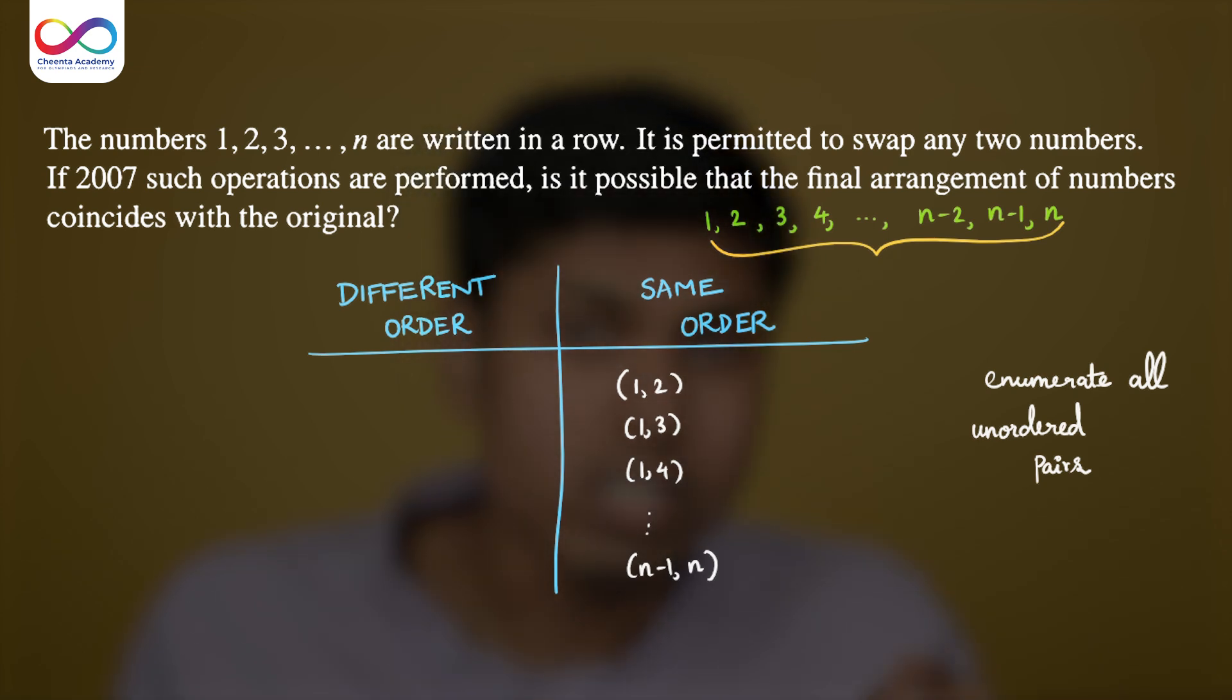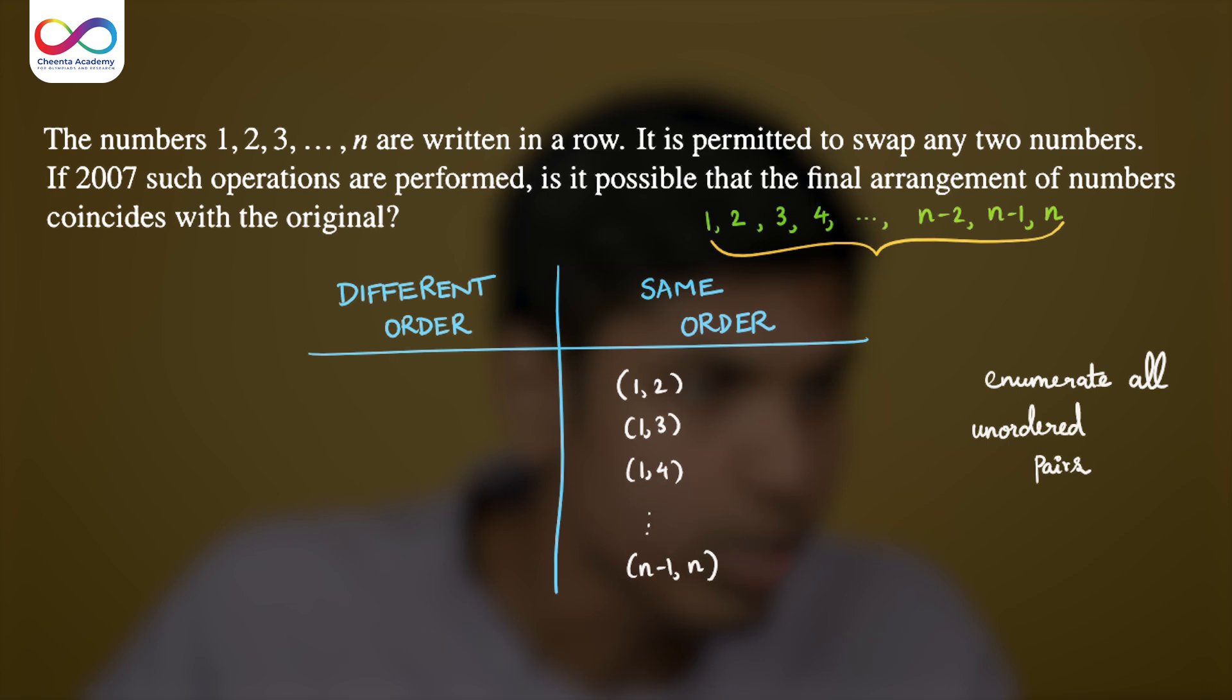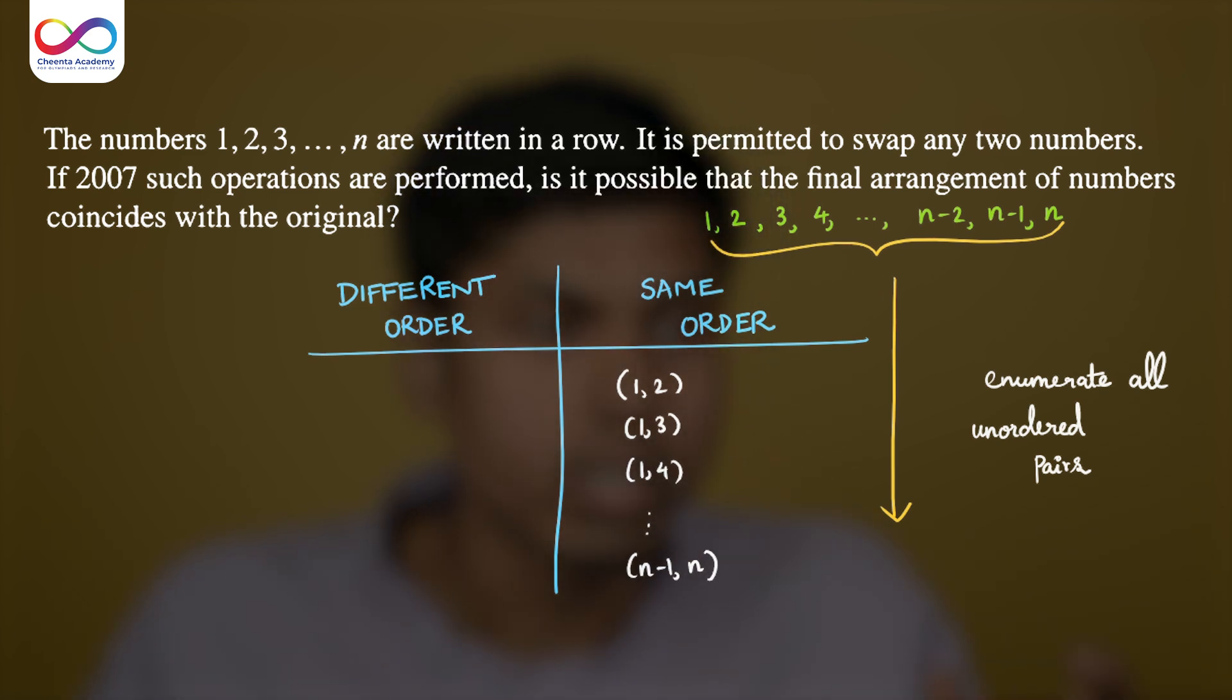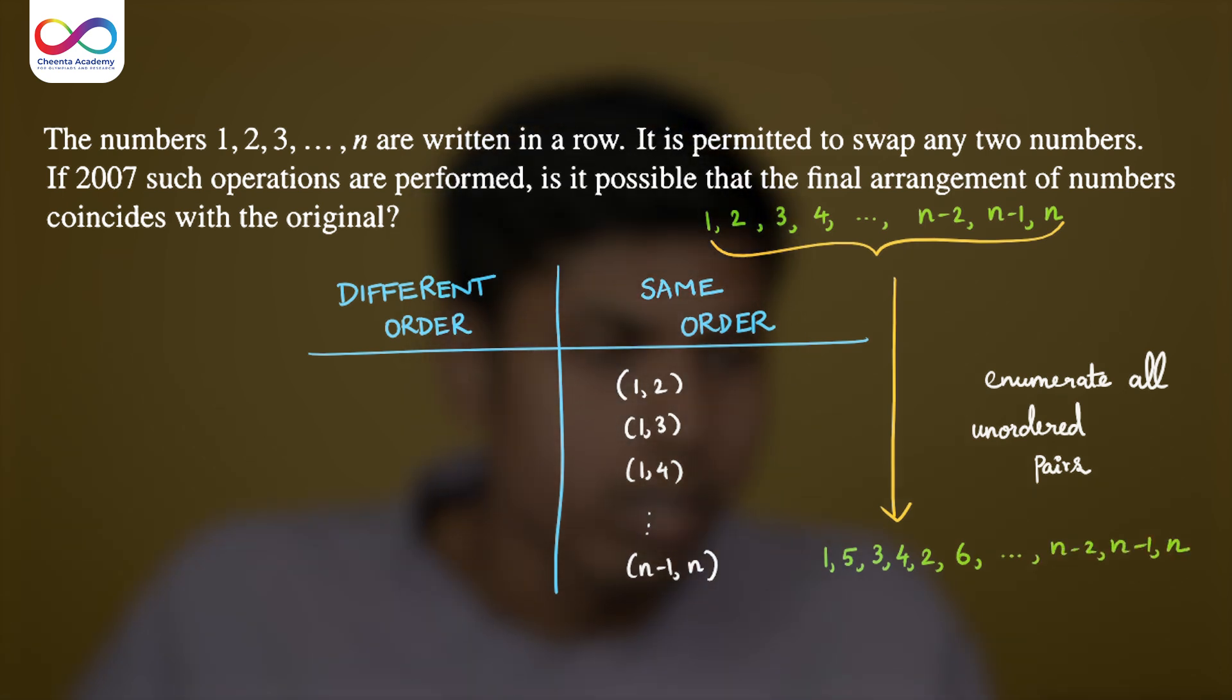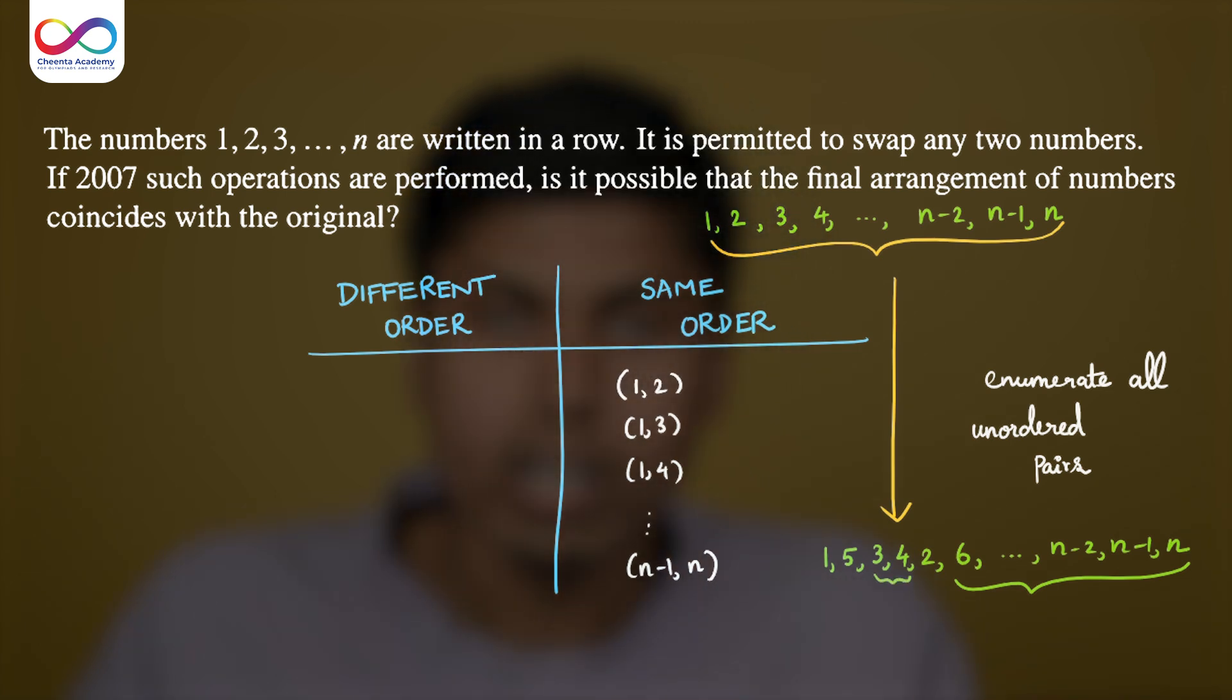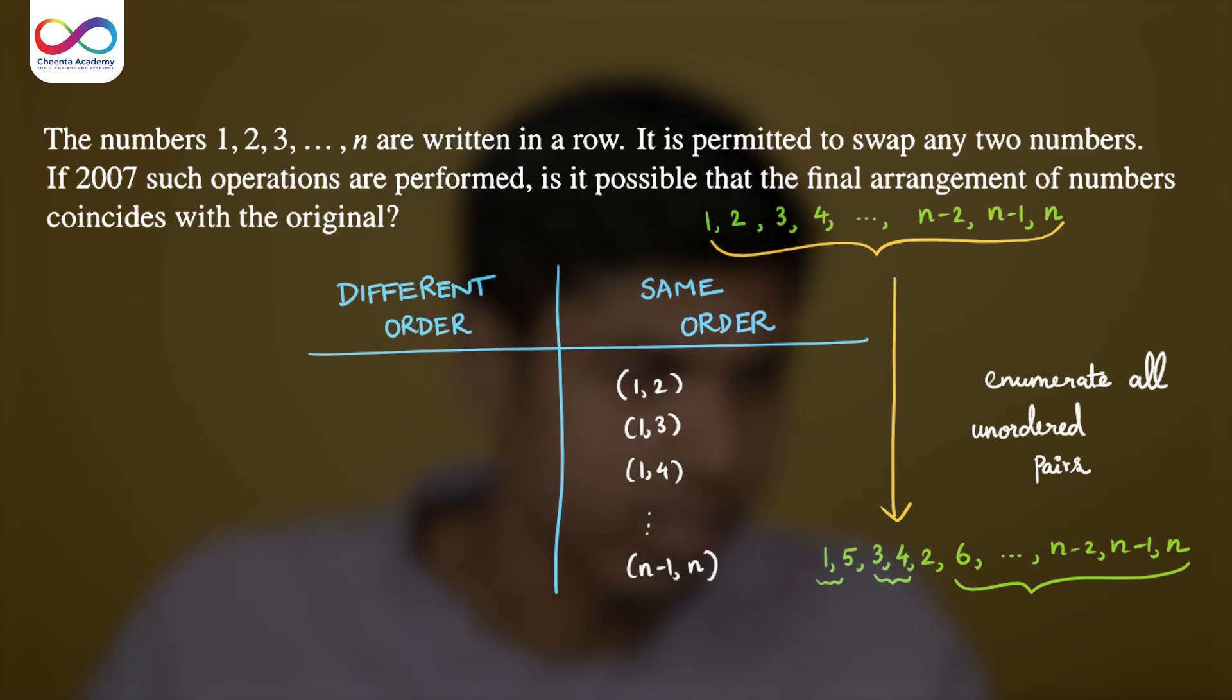Notice that if you perform one such operation, there will be some redistribution of these unordered pairs to the two columns. Let's perform one operation to understand this. Suppose if I consider swapping the numbers 2 and 5, then what will happen? You get 1, 5, 3, 4, 2, 6, all the way up to n-2, n-1, n. Notice that the numbers from 6 to n remain unchanged and 3 and 4 remain unchanged, 1 remains unchanged. They are fixed, only 2 and 5 are interchanged.